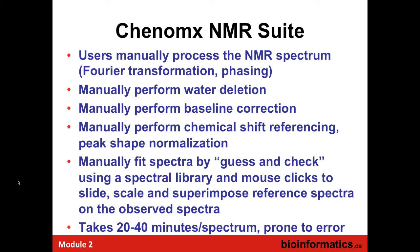You take your NMR spectrum, transform it, phase it, remove the water signal, correct the baseline, reference the chemical shifts, and normalize the peak shifts — all done manually. Then you fit the spectra through guess and check: you look at a peak and think it looks like alanine, click on alanine, and if it doesn't fit, try betaine instead. You have to have training and knowledge of what compounds might be present. It takes about half an hour to an hour for a person to fit a spectrum, and years ago this was part of a regular course, but too many mistakes were made without sufficient training.